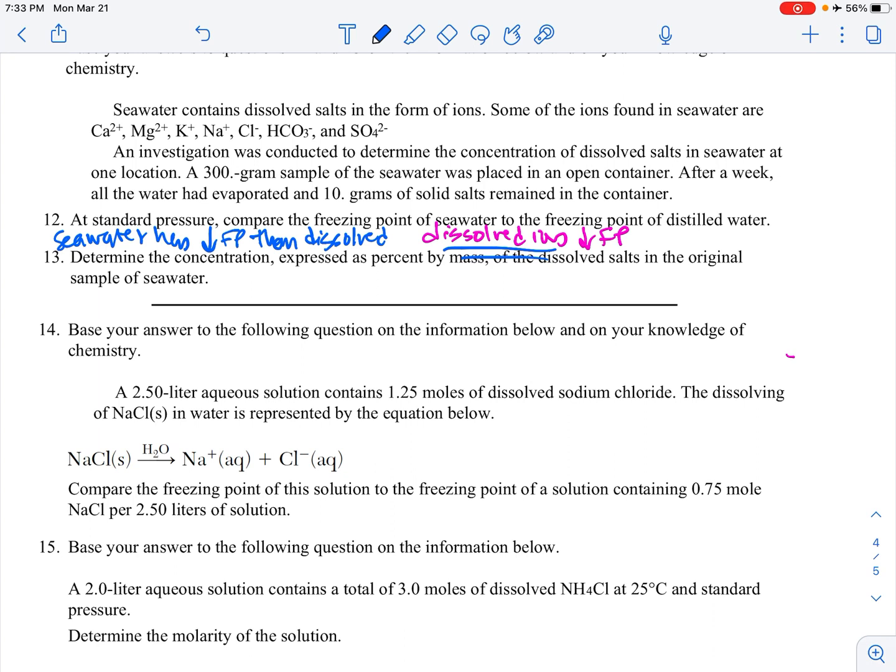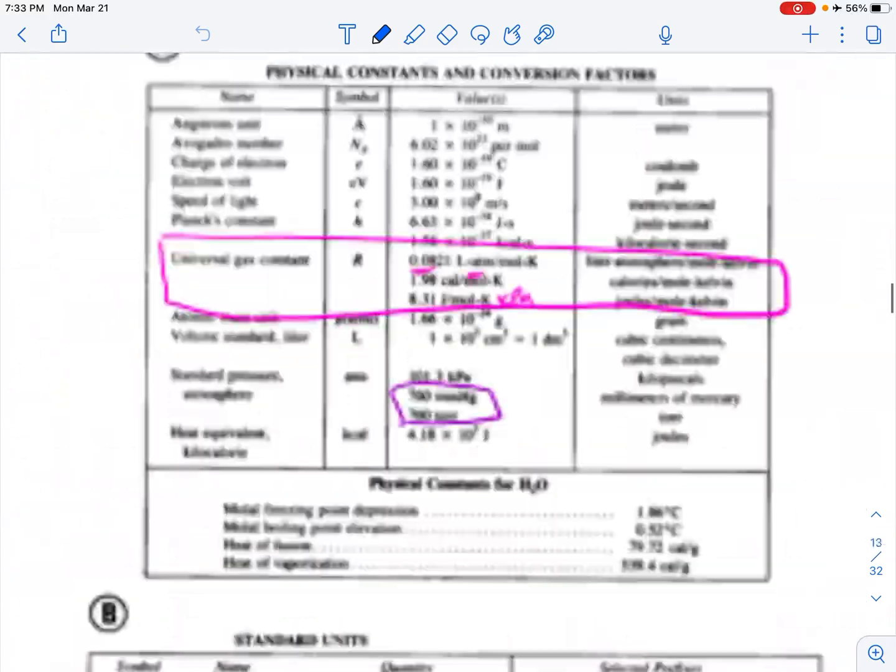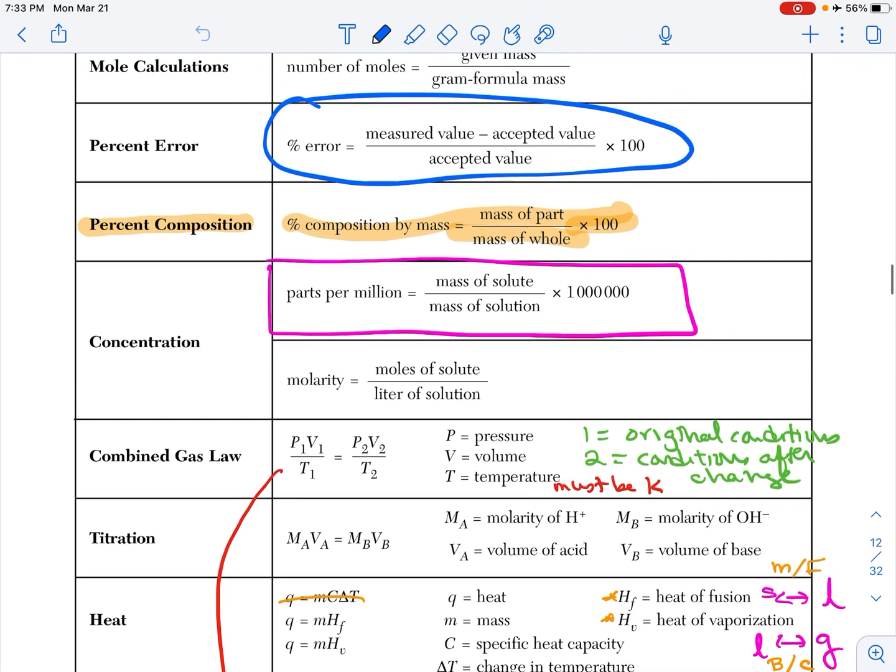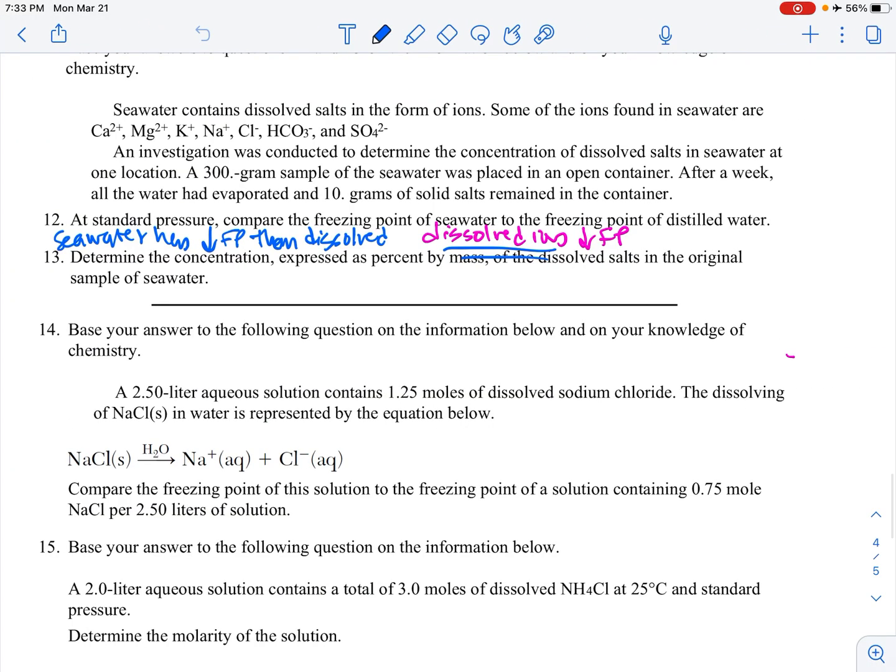Determine the concentration as a percent by mass of the dissolved solids in the original sample. So it says, let's see. And it doesn't say that we have to solve it. So it looks like, okay, so percent by mass, table T, percent of composition by mass, mass of part over mass of whole times 100. So the mass of the salt was 10 grams. The mass of the seawater was 300 times 100. So 10 divided by 300 times 100. 3.33 percent. It doesn't say that we need sig figs or anything. So you could just say 3 percent, 3.33, 3.3, whatever.